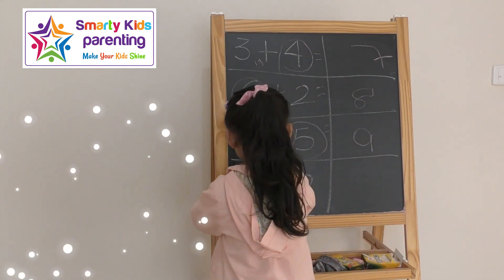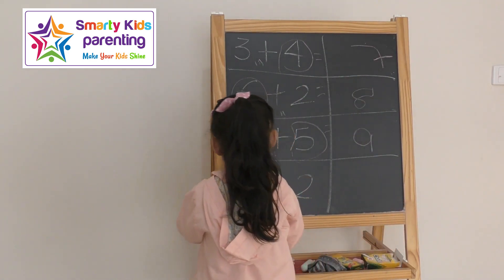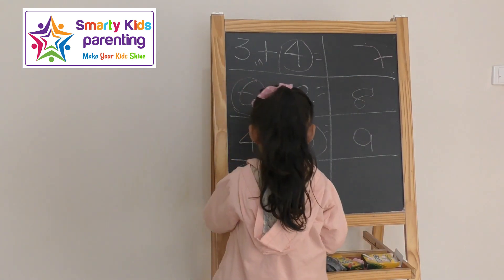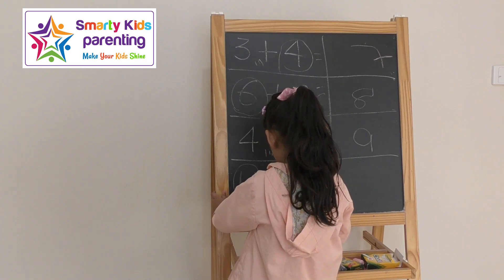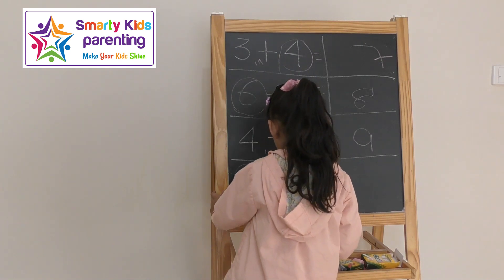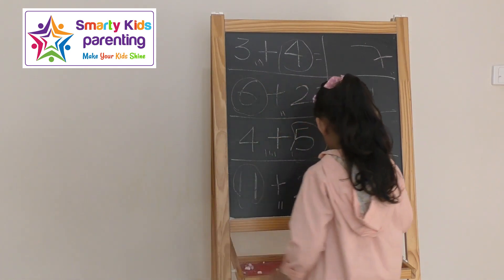So eleven is the bigger number. You count two after eleven. Twelve, thirteen. Good job!